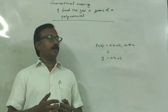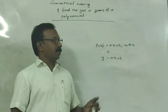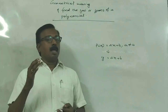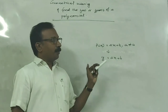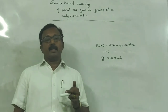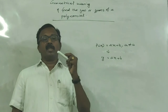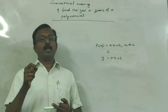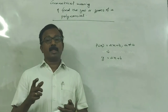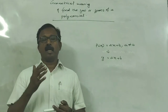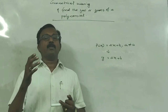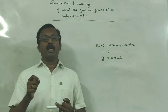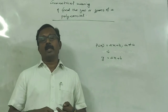First of all, draw the graph of y = ax + b, if the polynomial is P(x) = ax + b. Then find the point at which the graph intersects the x-axis. The x-coordinate of the point at which the graph intersects the x-axis is the zero of the polynomial.